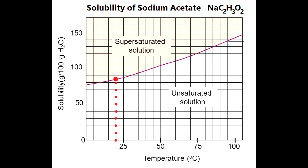Now if we heat up that solution, as we increase the temperature, the solubility also increases, so we'll be under that curve again. Close to boiling, we can fit in a lot more sodium acetate, and we can reach that higher solubility because of the higher temperature.